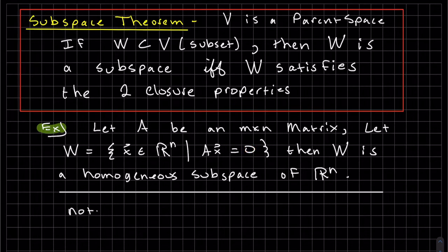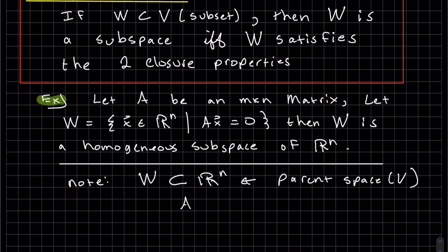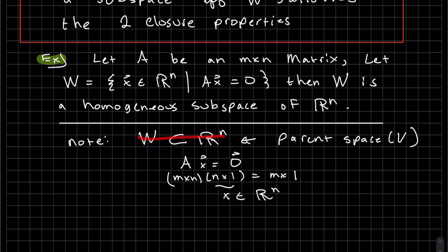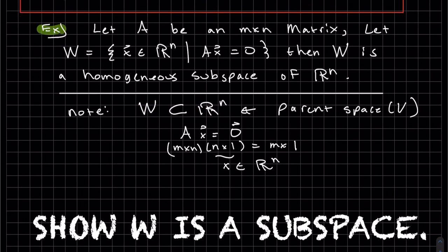Note that W is a subset of R^N, which is my parent space. If we have AX equals 0, we have an M by N matrix, then an N by 1 column vector, and we get our M by 1 column vector of 0s. So X is an element of R^N. It's a subspace. Therefore, W is a subset of R^N. Since it's a subspace of a parent space, all we need to show are the two closure properties.